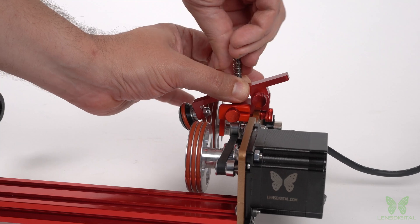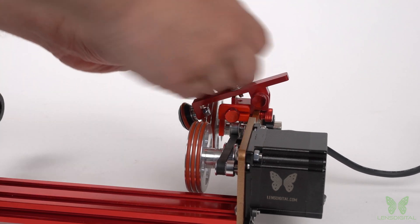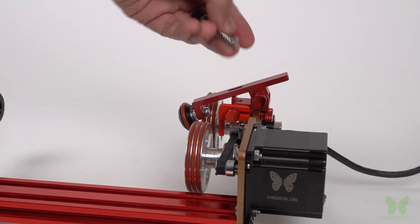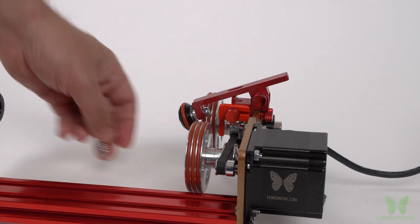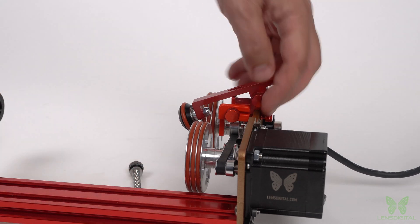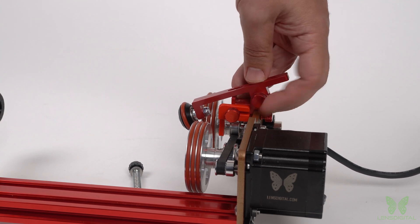Grab the spring and washers with one hand and slowly unscrew it with the other. Don't lose the spring and the washers. Now, unscrew this M4 thumb screw and remove the arm.